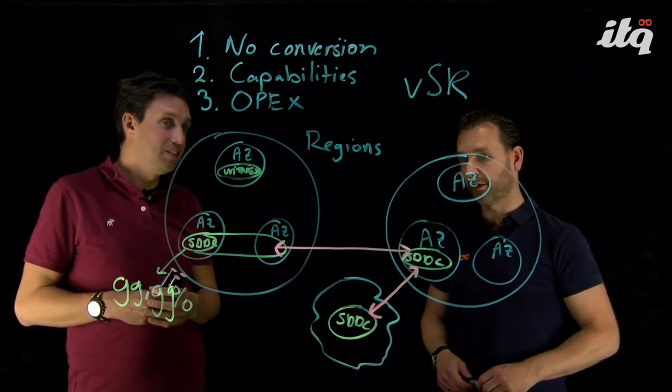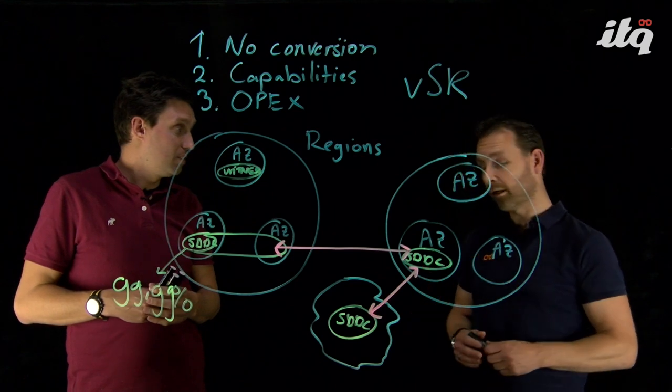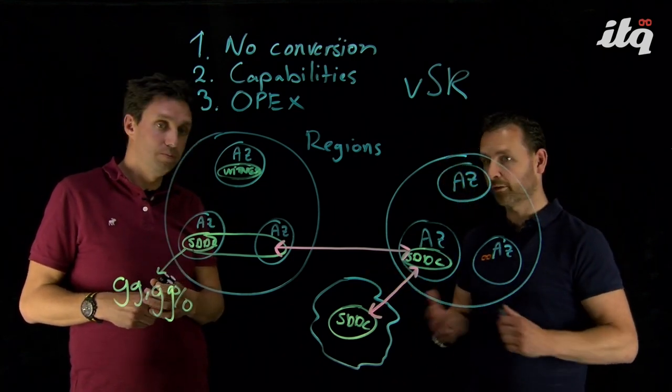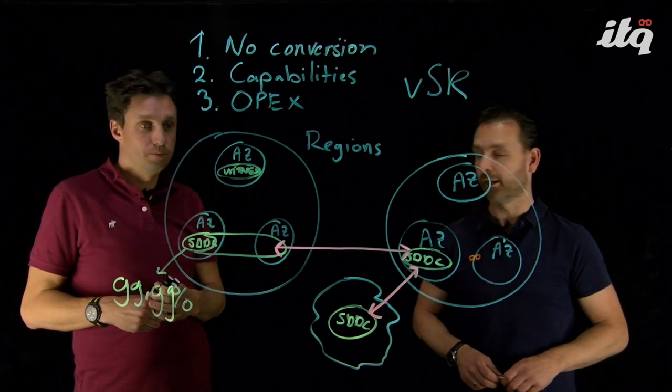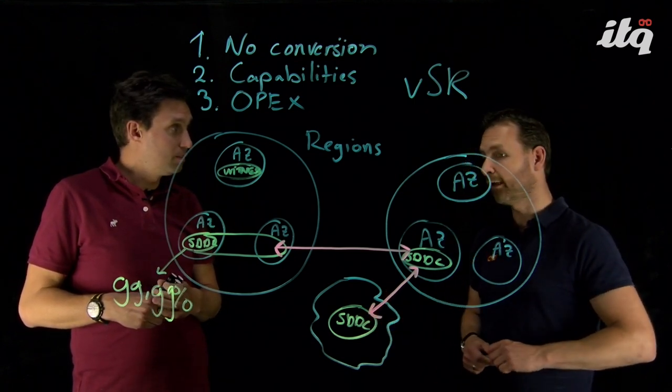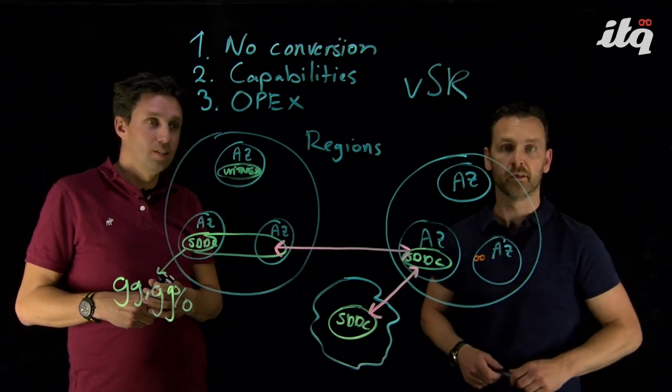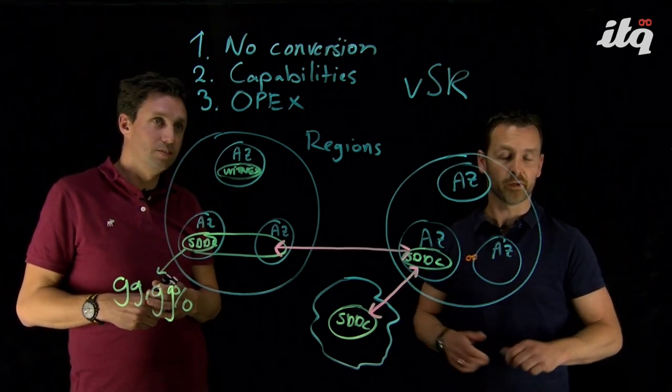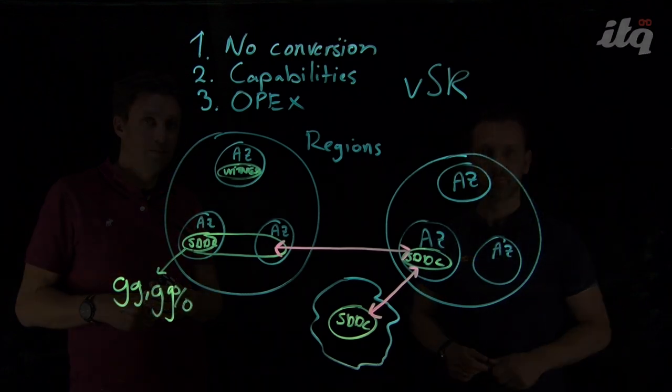All right. Well, I think this makes it very clear that VMware Cloud on AWS provides enterprise-grade availability for all types of workloads. But yeah, thank you very much, Victor, for explaining this stuff. And well, thank you for watching. And make sure to stay tuned on this channel for more content on VMware Cloud on AWS. Thanks. Thank you, Victor.